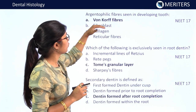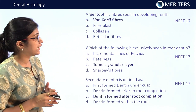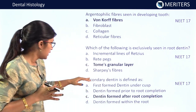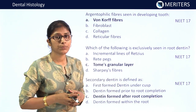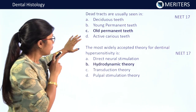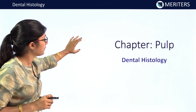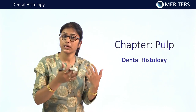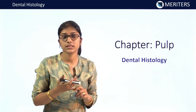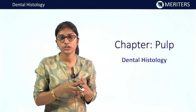Argentophilic fibers seen in developing tooth are von Korff fibers — NEET 2017. The structure exclusively seen in root dentine is Tomes' granular layer — NEET 2017. Secondary dentine is defined as dentine formed after root completion — NEET 2017. Dead tracts are usually seen in old permanent teeth — NEET 2017. The most widely accepted theory for dentine hypersensitivity is the hydrodynamic theory — NEET 2017. You should know sclerotic dentine, transparent dentine, dead tracts, and lamina limitans.